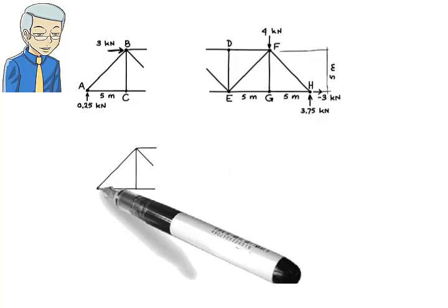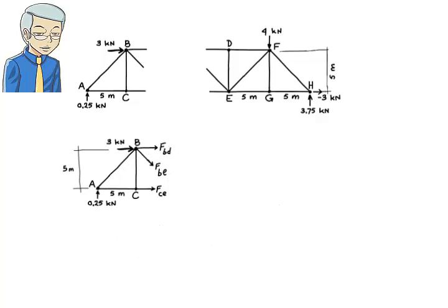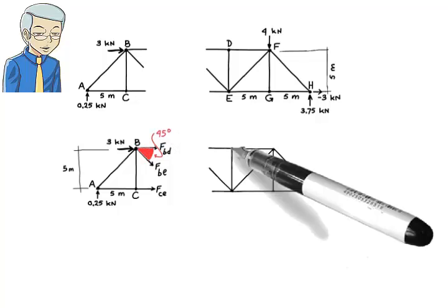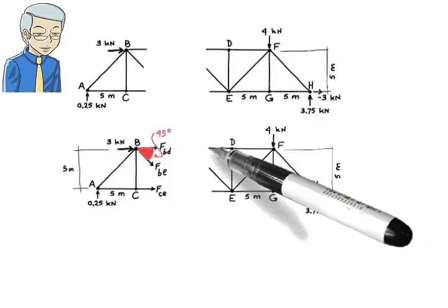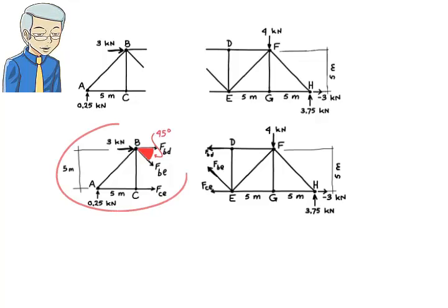For the left substructure, the forces are drawn like this. For the right substructure, they are drawn like this. For the sake of consistency, we assume that all the members are in tension. Therefore, the axial force associated with each cut member is drawn pointing away from the joint connected to the member. We can determine these unknown member forces by applying the equilibrium equations to either the left or the right free body diagram.